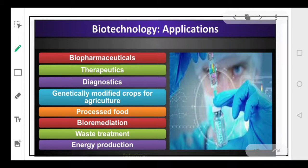We have studied in chapter number 11 the principles of Biotechnology — the applications, the places where we use biotechnology. Biotechnology is very important, and from that chapter we know that it basically deals with the production of a large number of biopharmaceuticals, therapeutics, and diagnostics. It also involves the production of genetically modified crops that are highly useful in agriculture. It helps in processing of food, bioremediation, waste treatment, and energy production. So we find that biotechnology has expanded its applications into a number of areas.